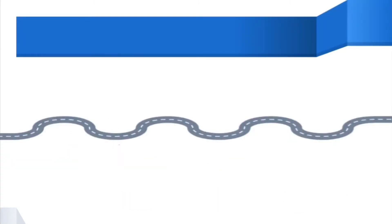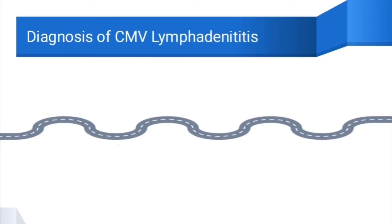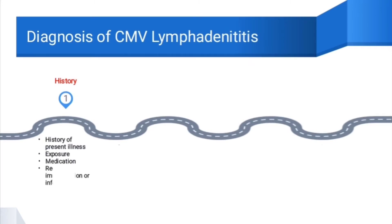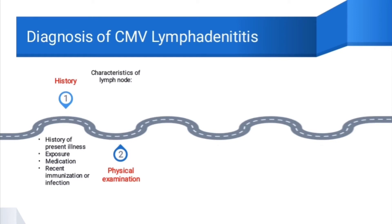Next is how to diagnose CMV lymphadenitis. Firstly, the physician will take a history of the patient, which will include history of abnormal lymph nodes and exposure from occupation or environment. Medications taken by the patient are also recorded, alongside recent immunization or infection. Next is physical examination, where the characteristics of the lymph nodes are examined. It is usually localized and can be either unilateral or bilateral. It also feels warm and tender to the patient and is usually located at submandibular or anterior cervical nodes.